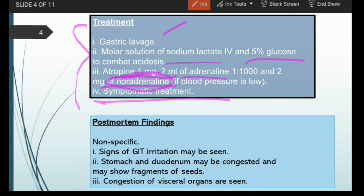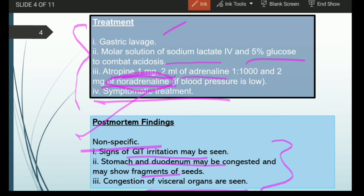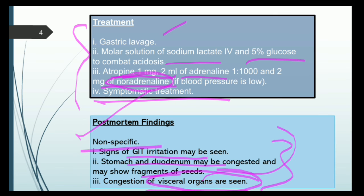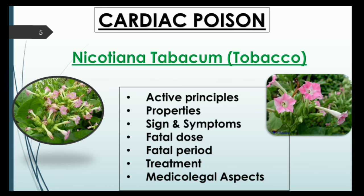Post-mortem findings are not very specific. It is important to note that numerous poisons have non-specific post-mortem findings. The gastrointestinal tract can be irritated, and the stomach and duodenum may be congested. Fragments of seed or other plant parts may be found in the stomach if ingested. Vital organs including the heart, liver, kidney, and stomach are often congested.